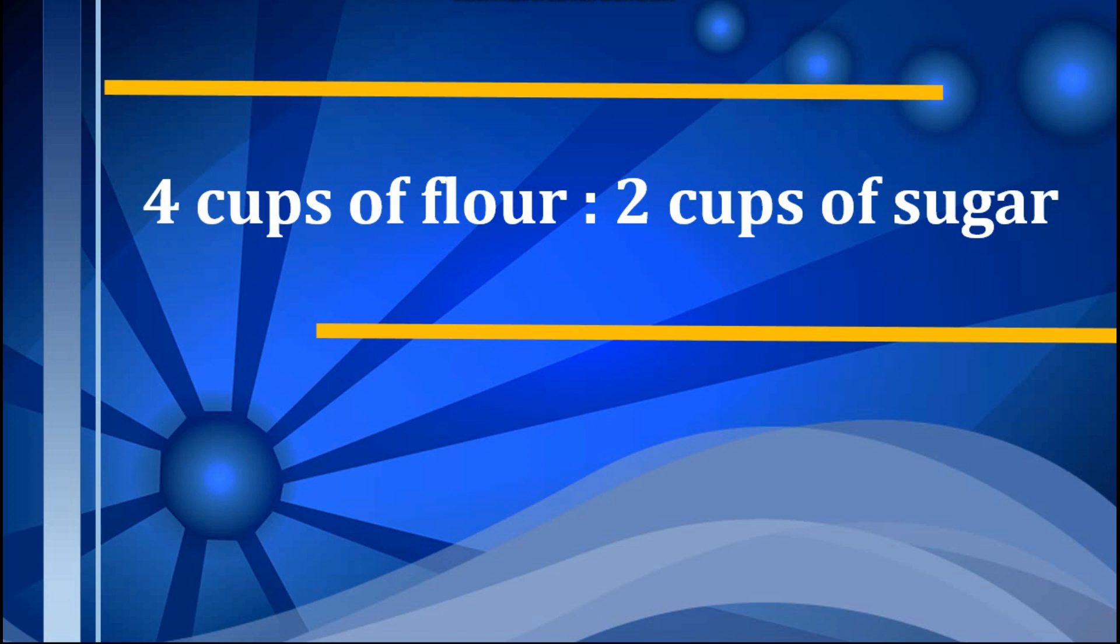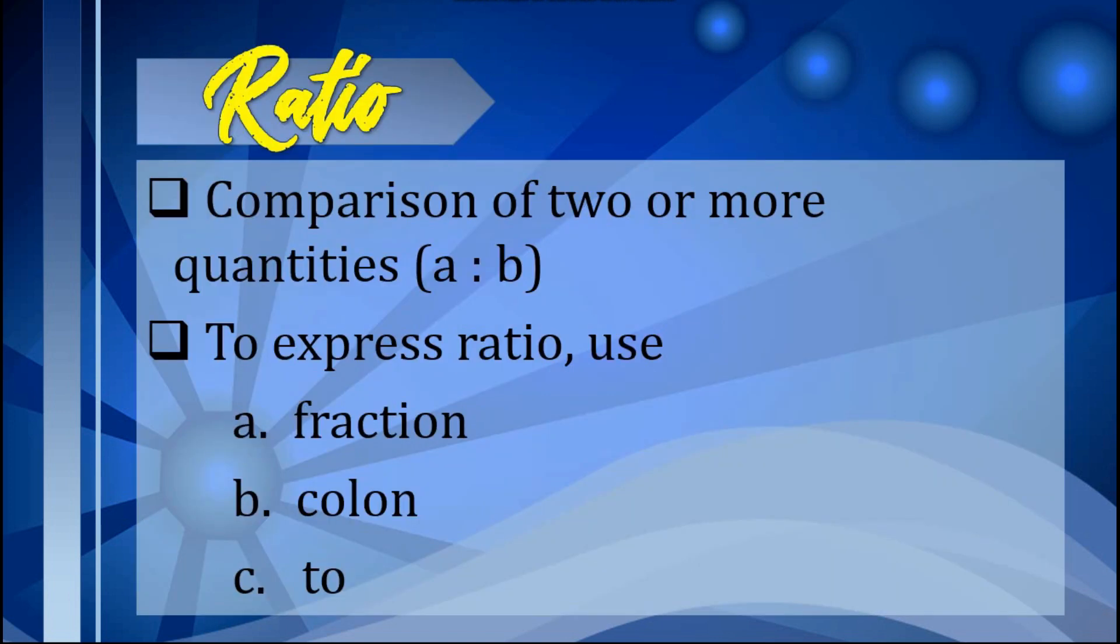So what is a ratio? Ratio is defined as a comparison of two or more quantities. It says how much one thing is compared to another thing. Let's say we have the quantities a and b. These quantities can be expressed with the same unit, and to express ratio we can use a fraction, colon, or the symbol 'to'.